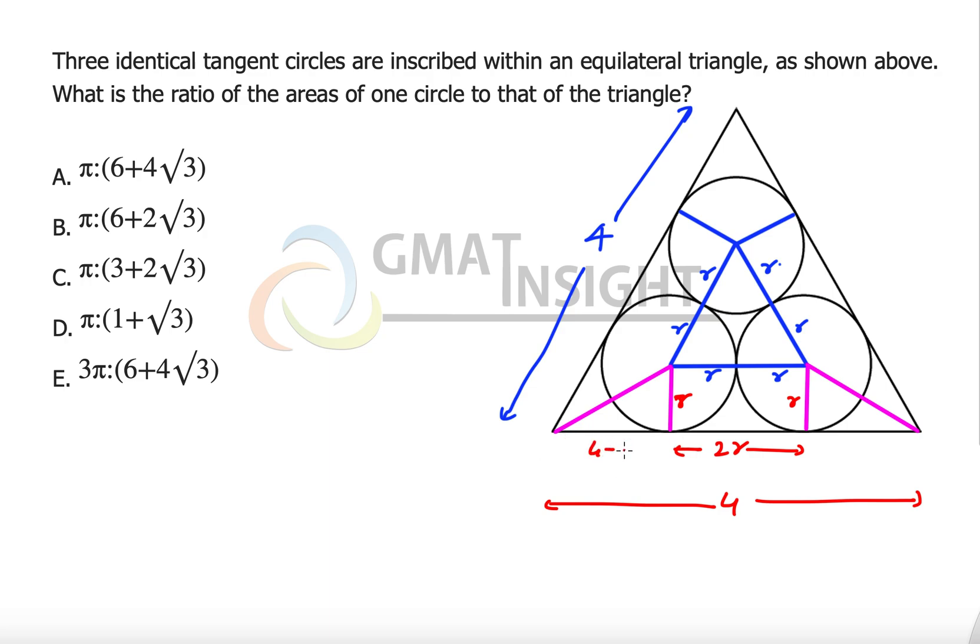The remaining part has to be distributed at both the places because it's a symmetric geometry, so this part also should be 4 minus 2r divided by 2.